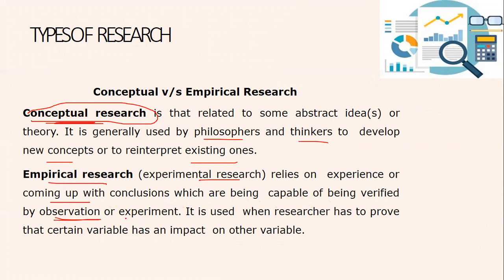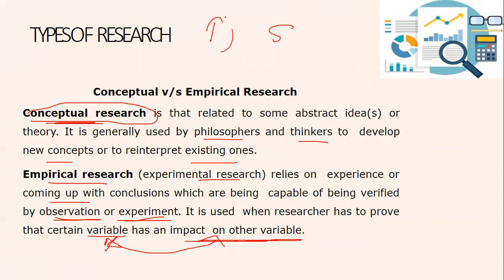Empirical research is used when the researcher has to prove that a certain variable has an impact on another variable — variable X has an impact on variable Y. For example, if you want to study the impact of intake of tea on sleep in a human being, your first variable is tea and the other is sleep. When you want to study such an impact, you will make use of empirical research.